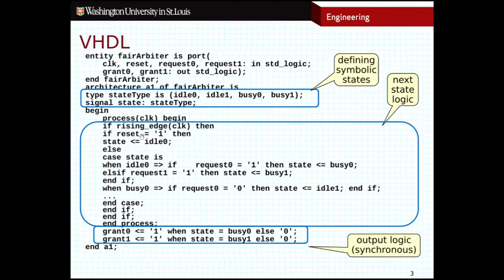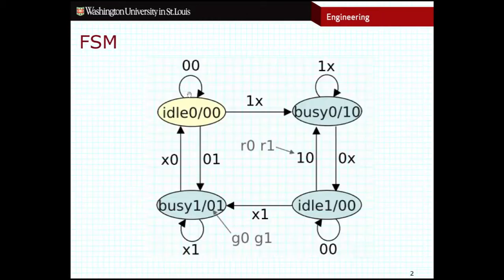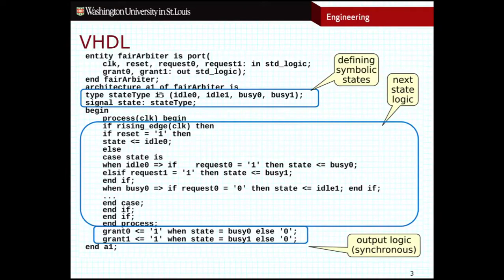I have a reset condition here. So if my reset input is high, then I want to return to state idle zero. If you recall from the finite state machine diagram, idle zero is our starting state. So if I ever want to reset, I'm just going to go back to my original starting state.